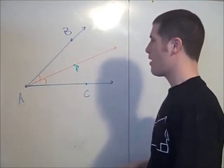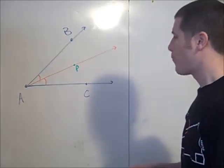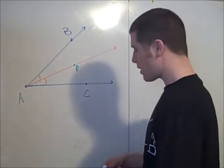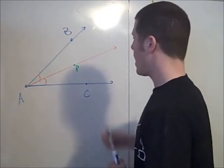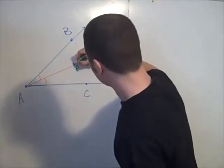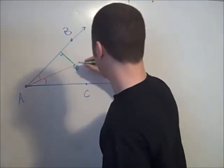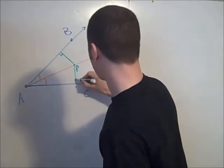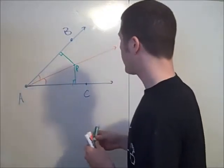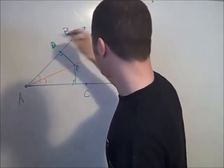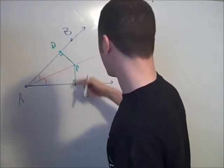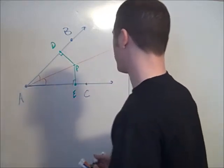Here's the proof. First we consider dropping perpendiculars from P to AB and AC. We aim to show that this length PD and this length PE are the same.